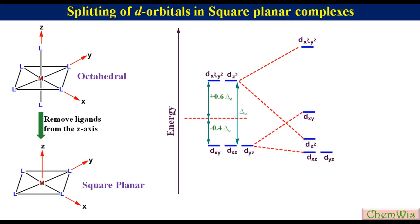This is the d-orbital splitting pattern in a square planar complex. The energies of dx²-y², dxy, dz² and dxz/dyz respectively are +1.23 delta-O, +0.23 delta-O, -0.43 delta-O, and -0.51 delta-O. The difference between the energy of dx²-y² and dxy is equal to delta-O.